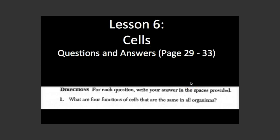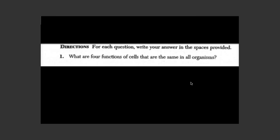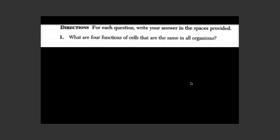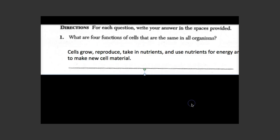Now we're ready to go over questions and answers in our book. Question number one: What are the four functions of cells that are the same in all organisms? Cells grow, they reproduce, they take in nutrients, and they use nutrients for energy and to make new cell material.